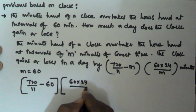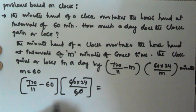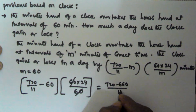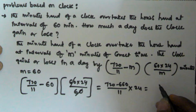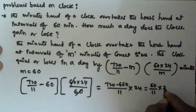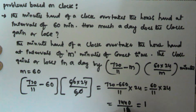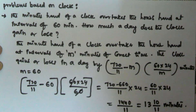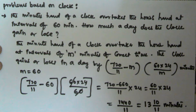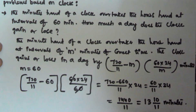The 60s cancel, giving us 720 minus 660, divided by 11, times 24. So 720 minus 660 is 60, giving us 60 times 24 divided by 11, which equals 1440/11. That works out to 130 and 10/11 minutes. So the watch will gain or lose 130 minutes and 10/11 minutes — that is, 130 and 10/11 minutes — in a day.